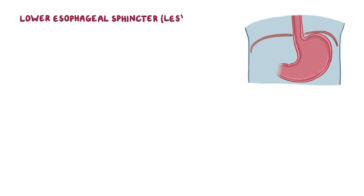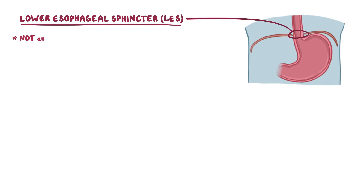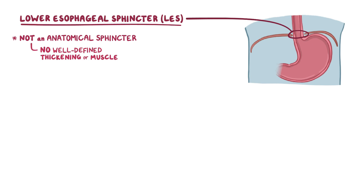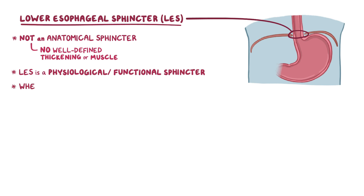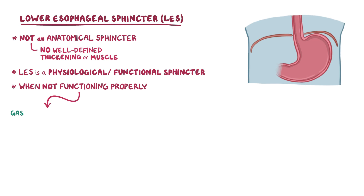The lower esophageal sphincter, or LES for short, is actually not an anatomical sphincter, which means histologically there is no well-defined thickening or muscle that controls the LES. Instead, it's considered a physiological or functional sphincter. But when the sphincter isn't functioning properly, it can lead to gastric acid reflux into the lower esophagus, which can cause heartburn.